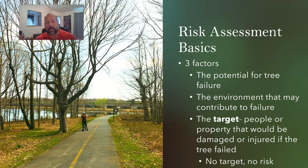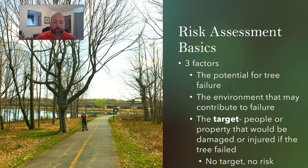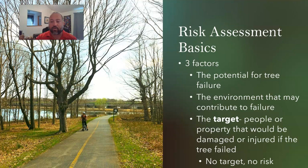If there's no target, there's no risk. If there's no bike path here and nobody's supposed to walk through, you're not as worried if a branch drops or the tree falls. But because that branch is right over the bike path and the tree could fall onto it, there is concern that we could hurt somebody or cause damage. It's really important to look at all three factors: potential for tree failure, environment, and target.